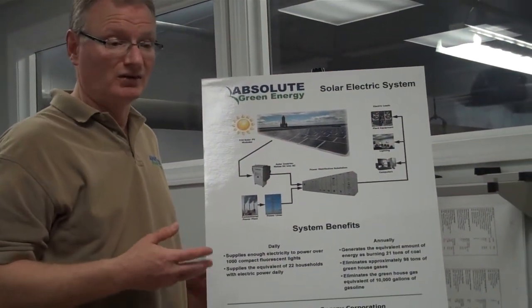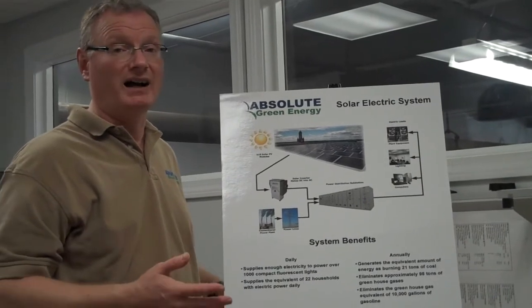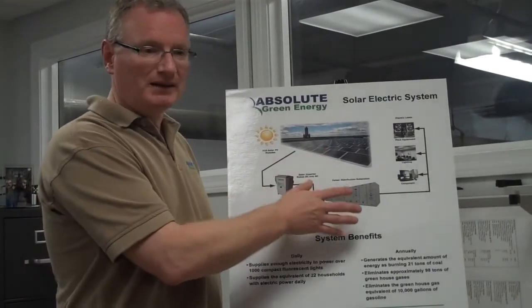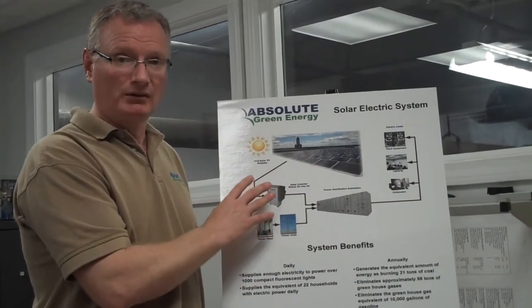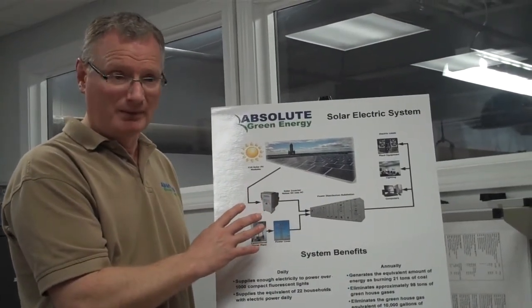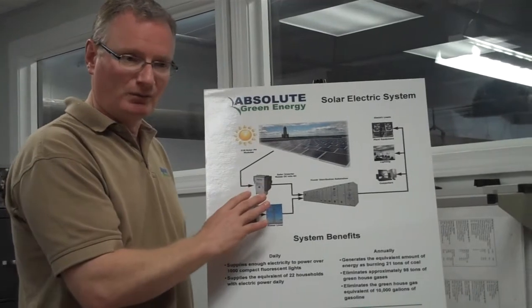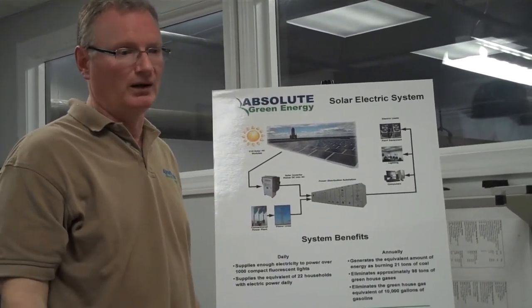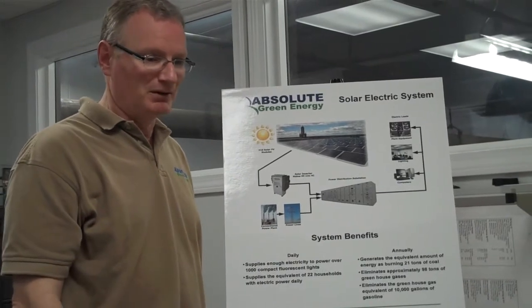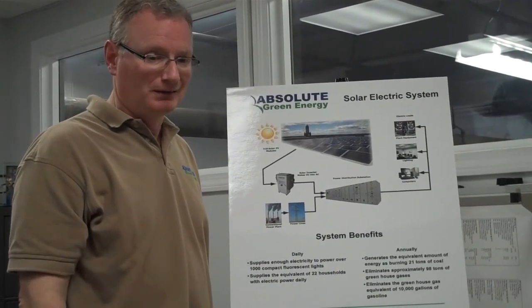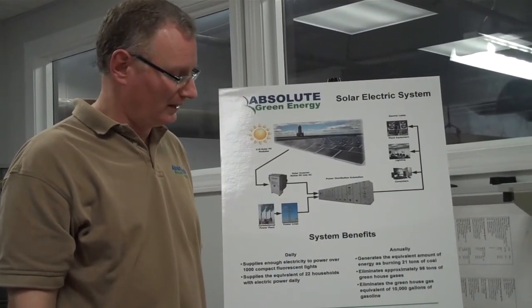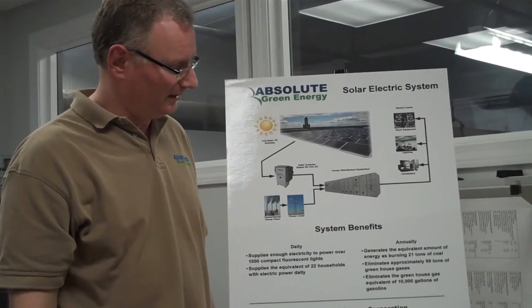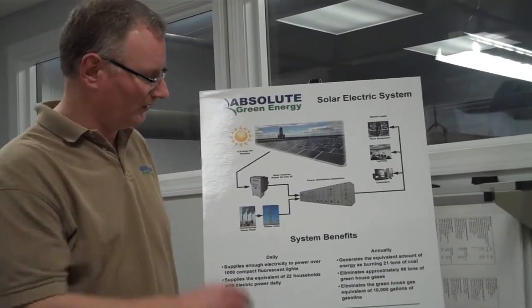In some instances during the summer when the solar resource is very high, you may actually have a system that's a little larger than what you actually consume during that period. So a grid tie system will actually push the power out to the grid so that it can be used in other facilities — maybe your neighbor's home or neighboring commercial facility. That's the overview of the system.